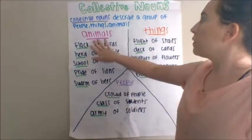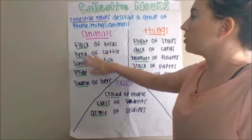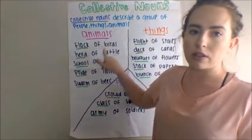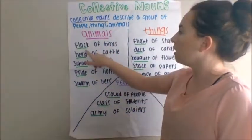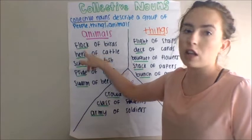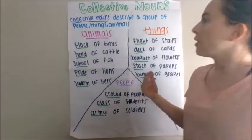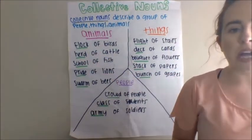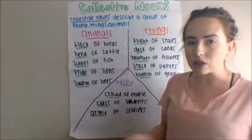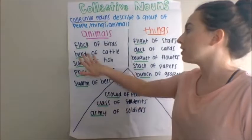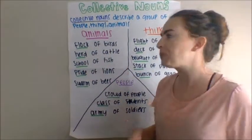So if you want to describe some animals, a group of birds, you would call it a flock of birds. If you wanted to describe a group of cattle, you would call it a herd of cattle.